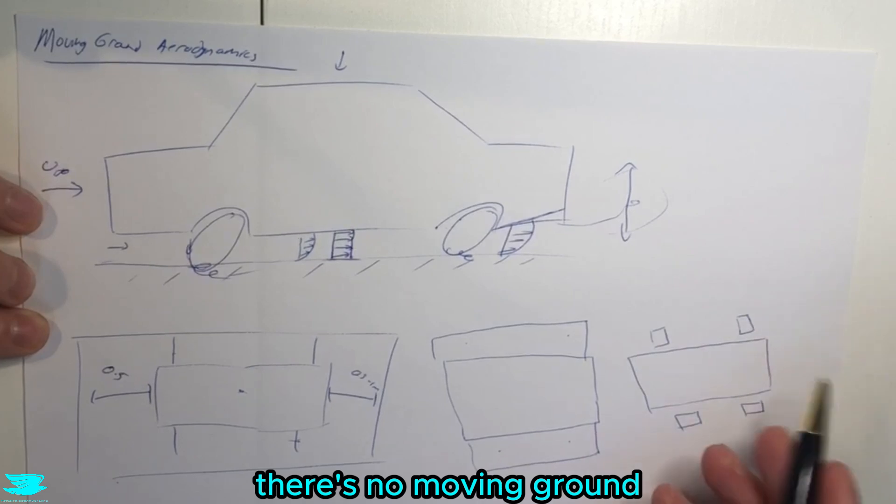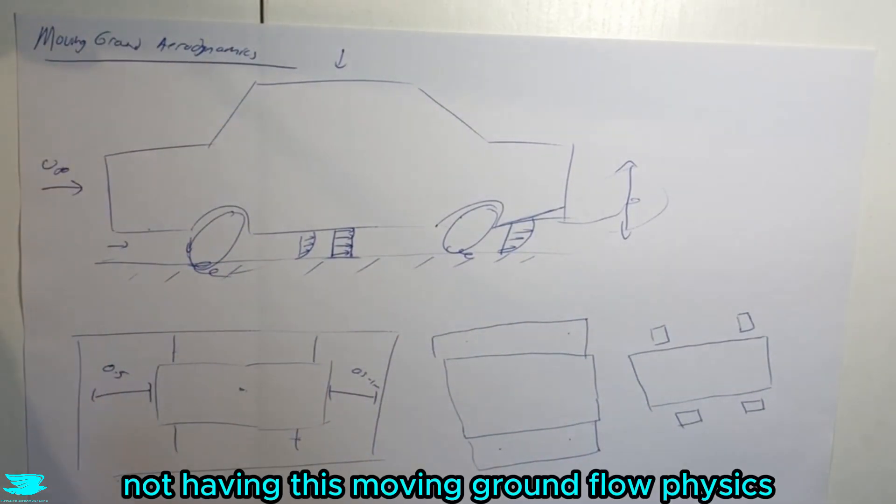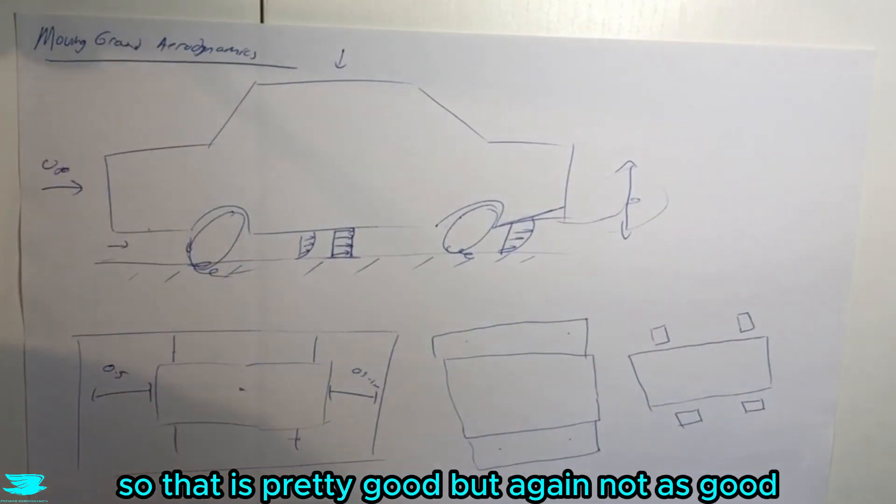Also upstream of them, there's no moving ground. So the sides of the car and the front of the car on the sides are not having this moving ground flow physics occurring. That is pretty good, but again, not as good as these situations.